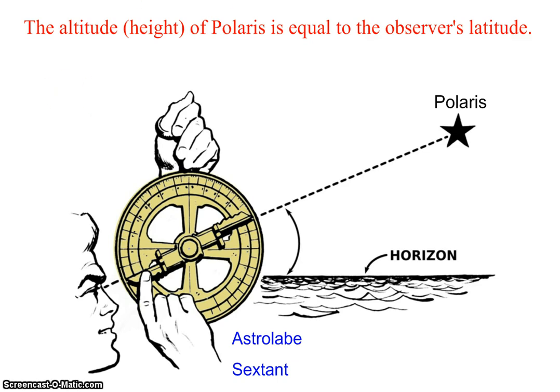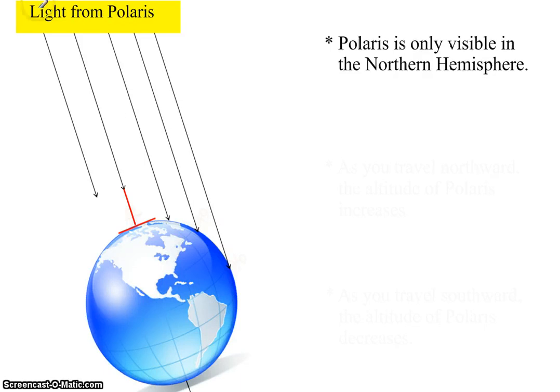So if you observed Polaris 48 degrees above the horizon, it meant that your latitude was 48 degrees north. The reason it works that way is because Polaris is located right on top of the Earth's axis. But it's so far away that when light from Polaris gets to the Earth, it's basically all coming in from the same direction.